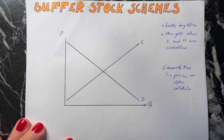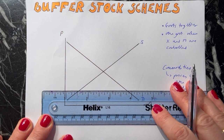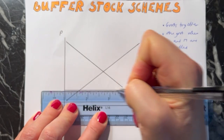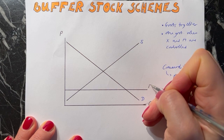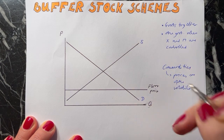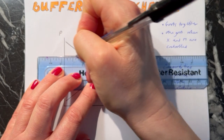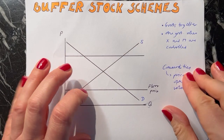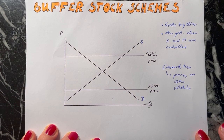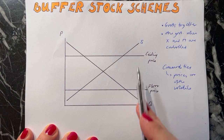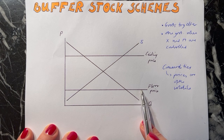In a buffer stock scheme a floor price is set. The floor price, which is below the equilibrium, is the lowest that the commodity is allowed to go under the scheme. There's also a ceiling price - like a house with a floor and a ceiling - and the ceiling price is above the equilibrium. The price isn't allowed to go any higher than the ceiling price. They need to decide carefully where to set these, as it can cause problems if they aren't set in the right place.